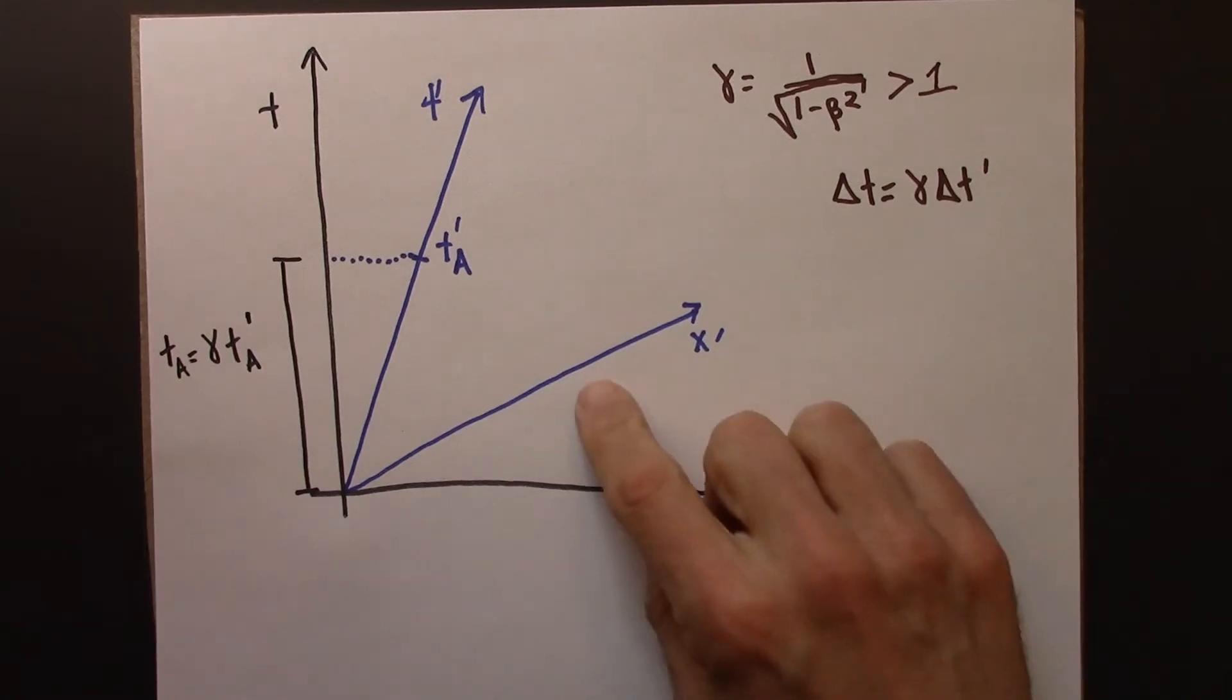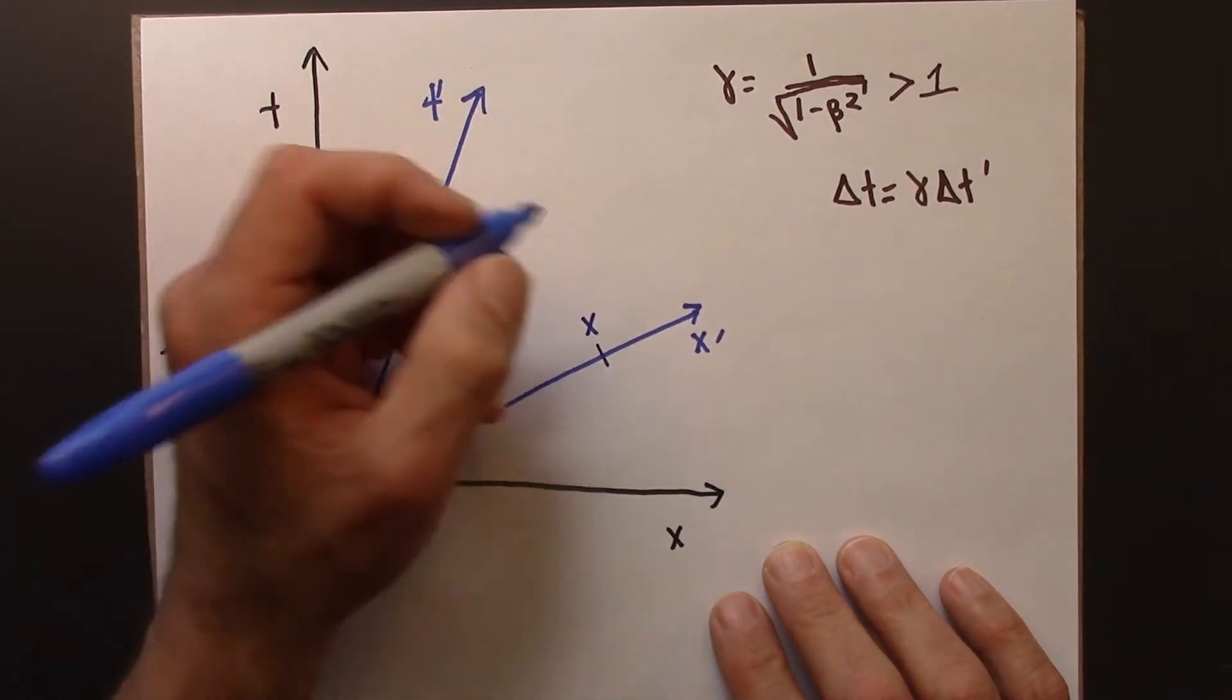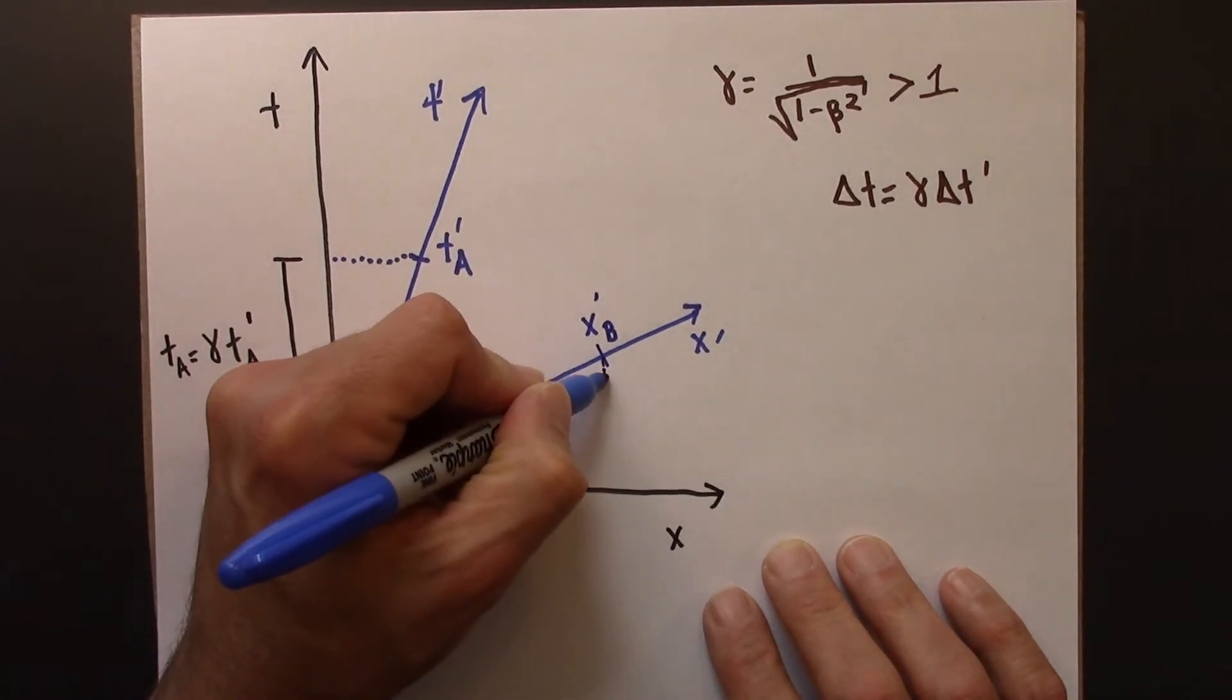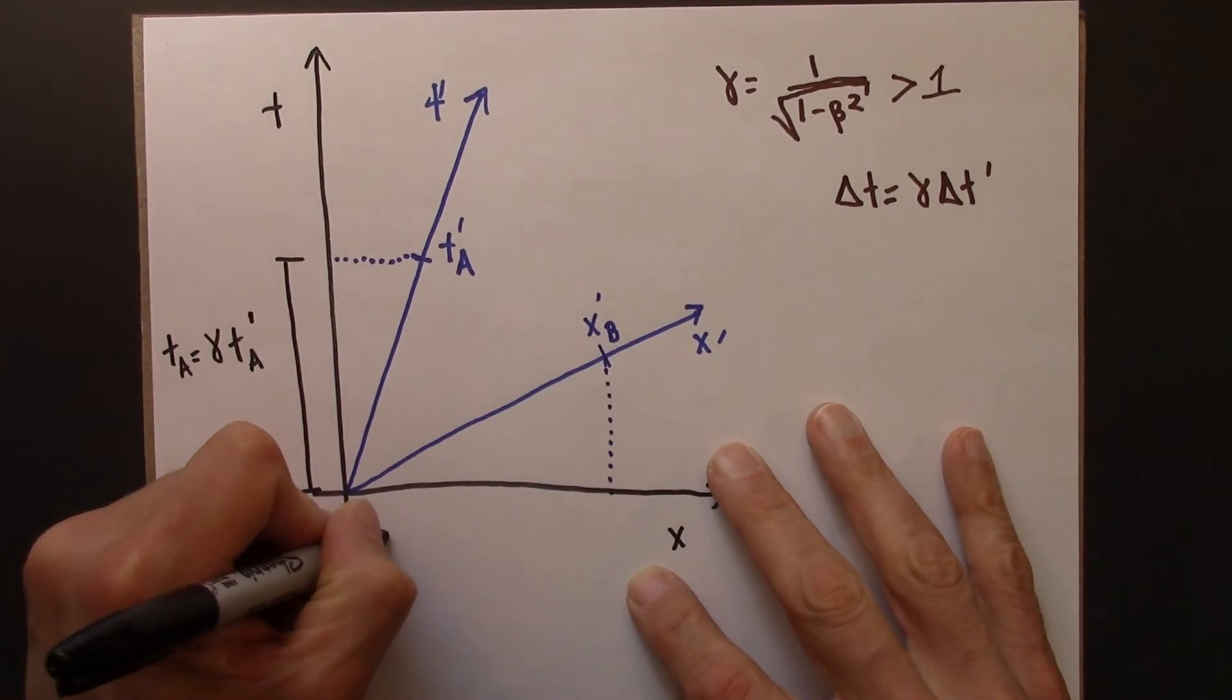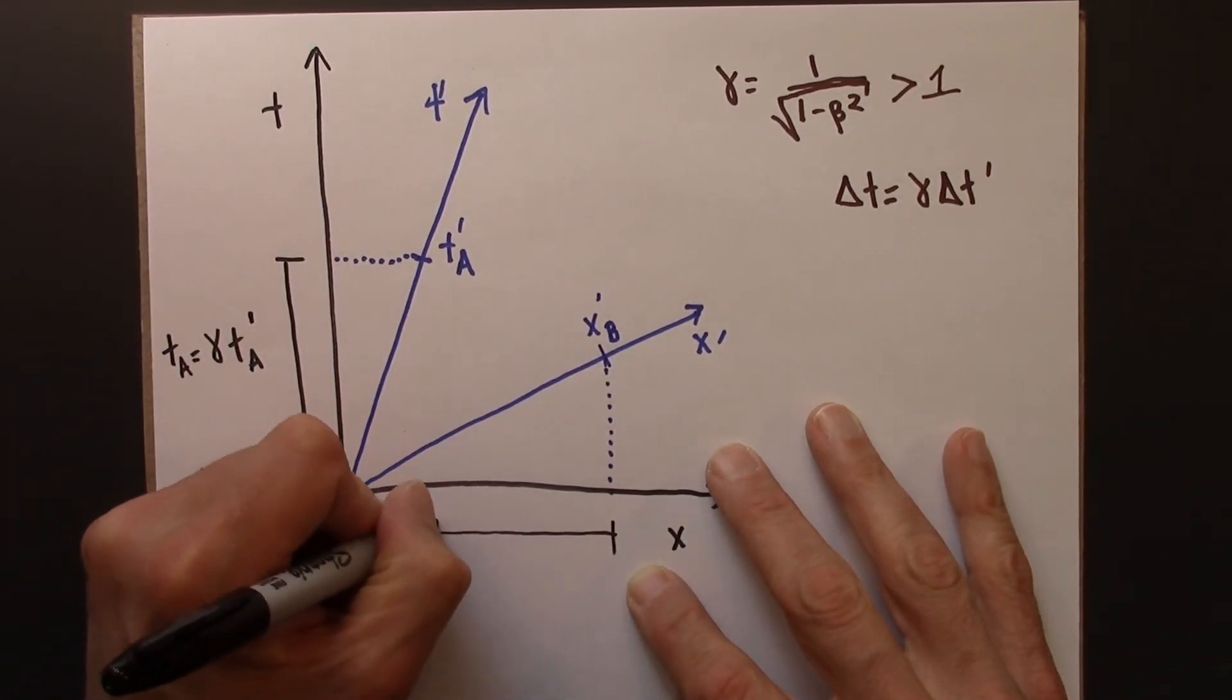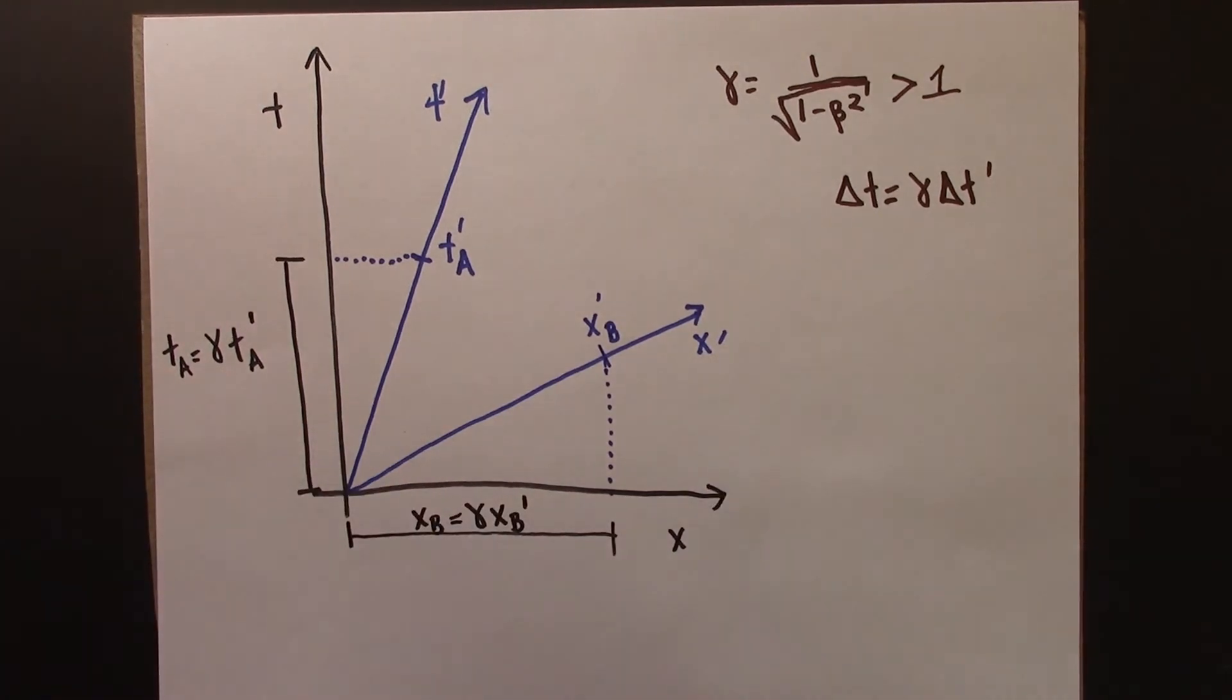And we calibrate the x prime axis the same way. So if Beowulf has some reading, maybe this would be for a different event, x prime b, and we want to know what does Anna, what does the at-rest frame think for this? So this distance in space, which we could call x_b, is just gamma times x_b prime.